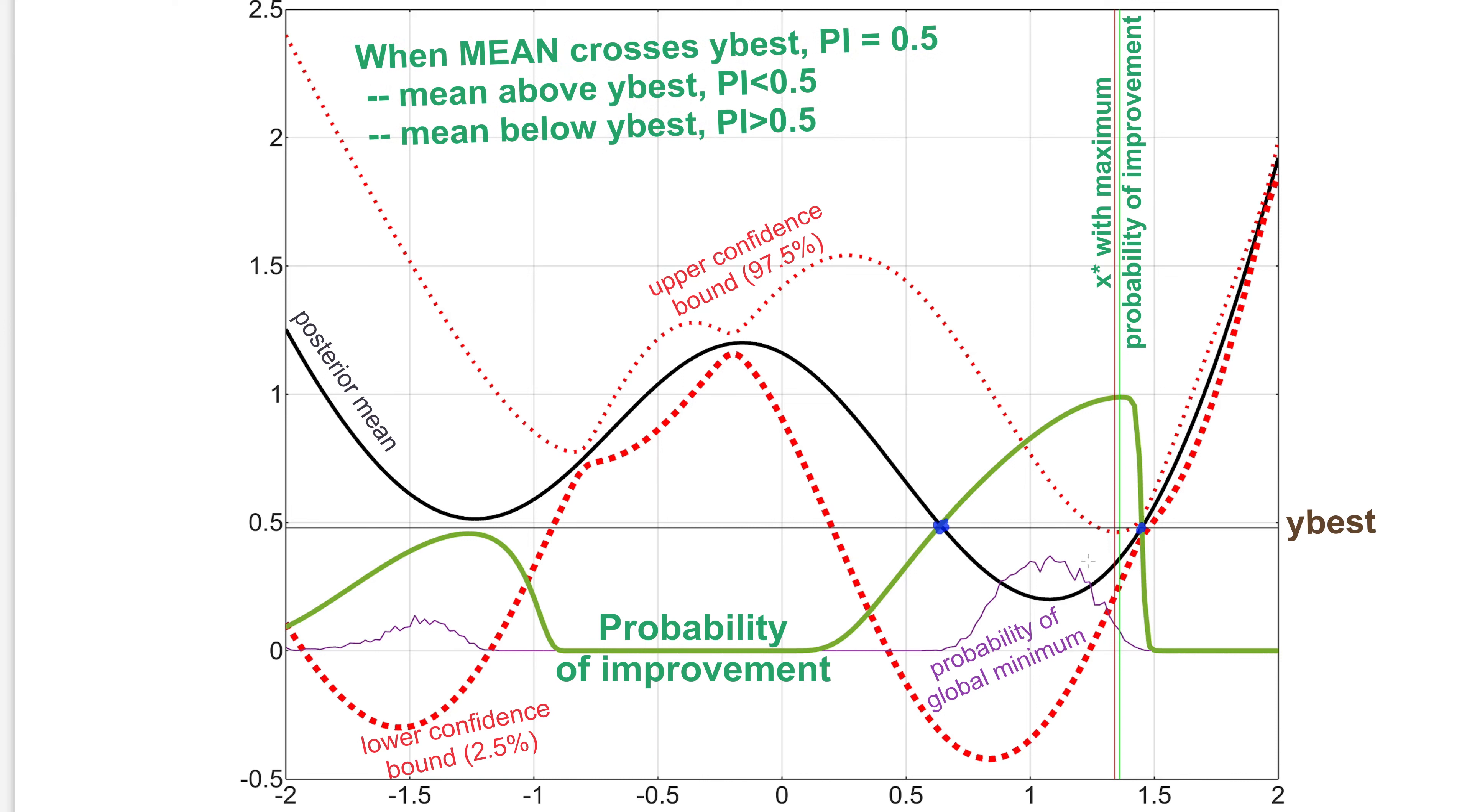What does the green curve mean? First, we see that at these points in which my mean crosses the best point, then probability of improvement is 50%. Of course, because half of the points will improve, and half of the points will not improve, if I throw the dice at a given point here.